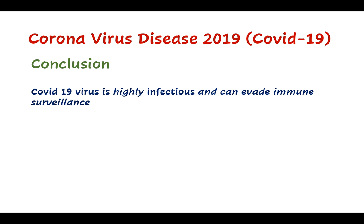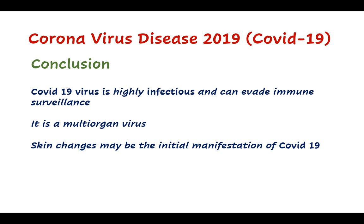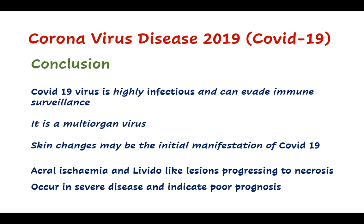In conclusion, the COVID-19 virus is highly infectious and can evade immune surveillance. It is a multi-organ virus. Skin changes may be the initial manifestation of COVID-19. Acral ischemia and livedo-like lesions progressing to necrosis occur in severe disease and indicate poor prognosis. Many points are still not clear regarding the COVID-19 virus, and the coming days will reveal more of its secrets. Thank you very much for your attention.